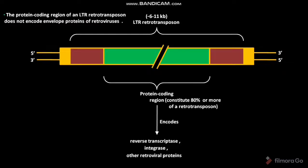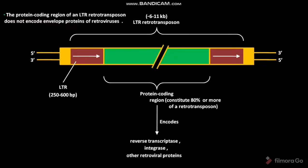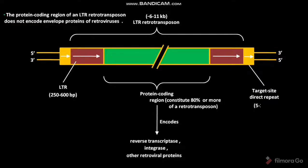The protein coding region of an LTR retrotransposon does not encode envelope proteins of retroviruses. The protein coding region is flanked by two LTRs, or long terminal repeats. These LTRs have about 250 to 600 base pairs, and their length depends on the type of LTR retrotransposon. The LTR retrotransposon also has target site direct repeats at each end, with a length of 5 to 10 base pairs.